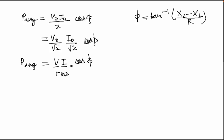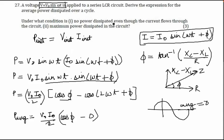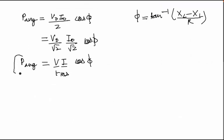We have derived the expression for average power dissipated. Now let's discuss the conditions for minimum and maximum power. The power can also be written as P = I² · Z · cos(φ). The minimum value occurs when cos(φ) = 0, and the maximum value occurs when cos(φ) = 1.